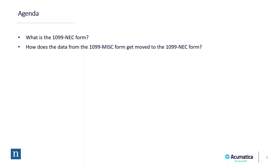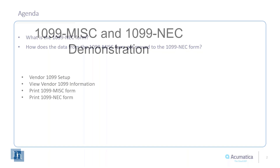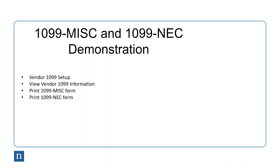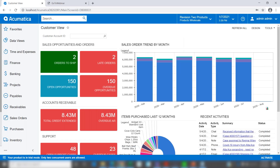To make sure this happens, all you have to do is be at a current enough version of Acumatica. There is no utility to run, nothing to install or anything like that. We'll talk about the specific versions a little bit later. Let's take a look at how this works — we're going to do a quick demonstration covering setting up 1099 information for the vendor, viewing the vendor's 1099 information, and printing the two forms.